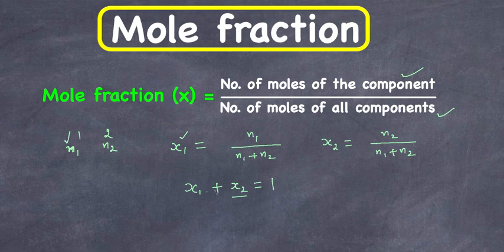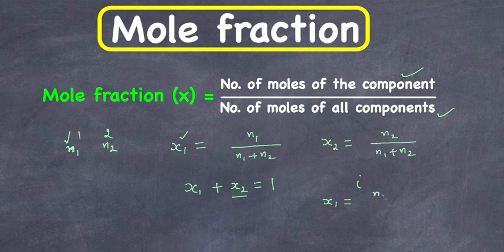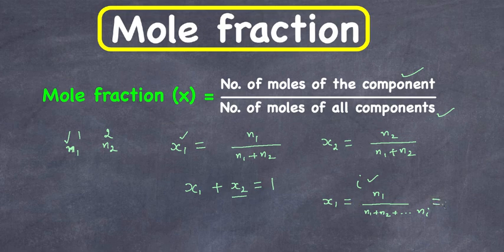If we have a solution made up of many components — let's say i number of components — then we can write the mole fraction of the first component as x1 equal to the number of moles of the first component, n1, divided by the number of moles of all components, which goes up to n_i. Mathematically, this is n1 divided by the summation of n_i.